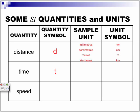Time, we are using the letter T. Sample units: seconds, minutes, hours, years, and the symbols S, MIN, H, YR. And for speed, we are going to use the letter V.